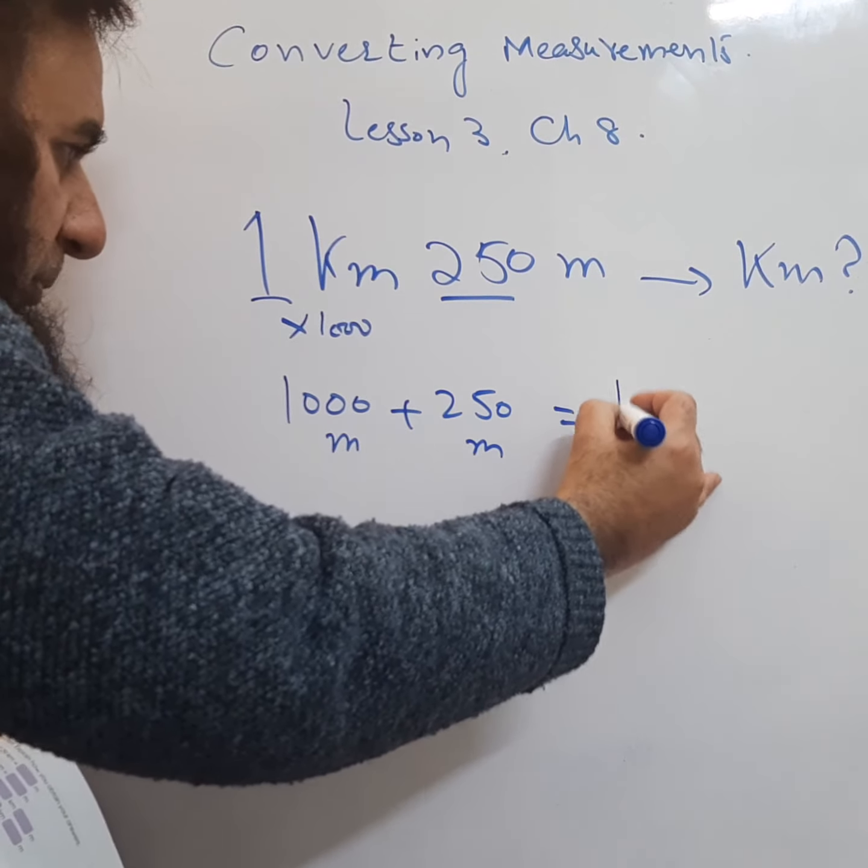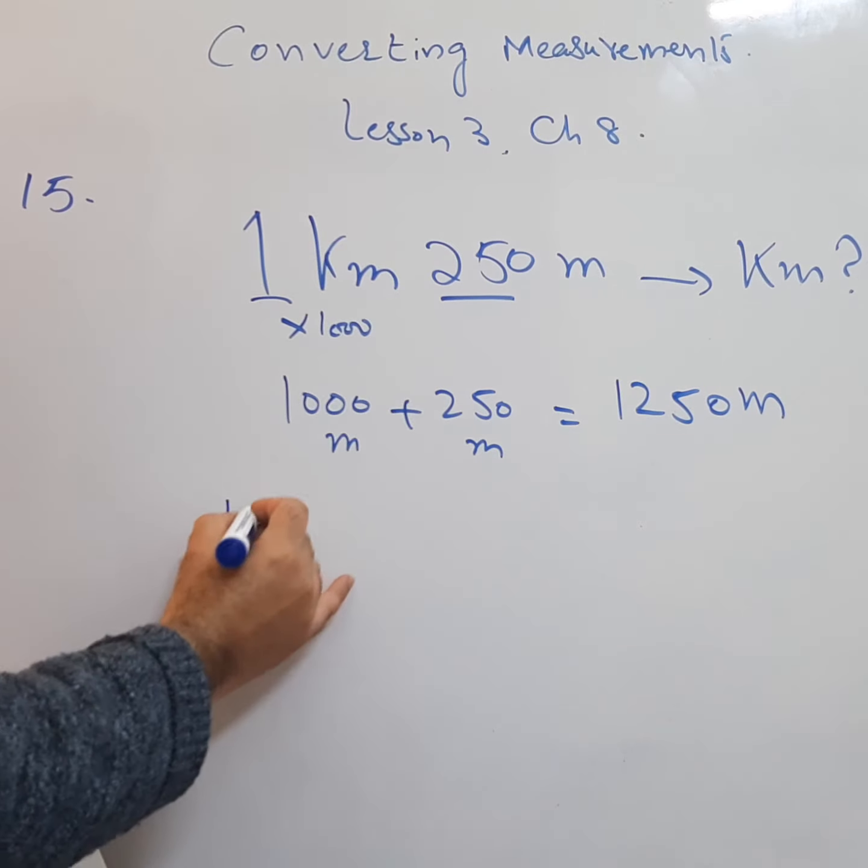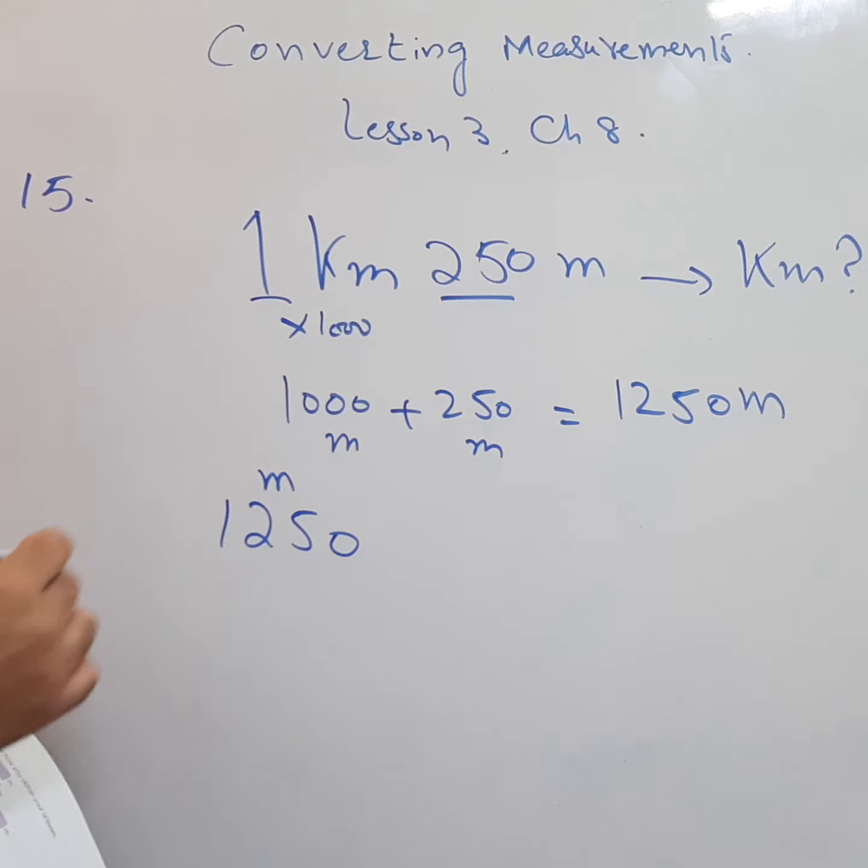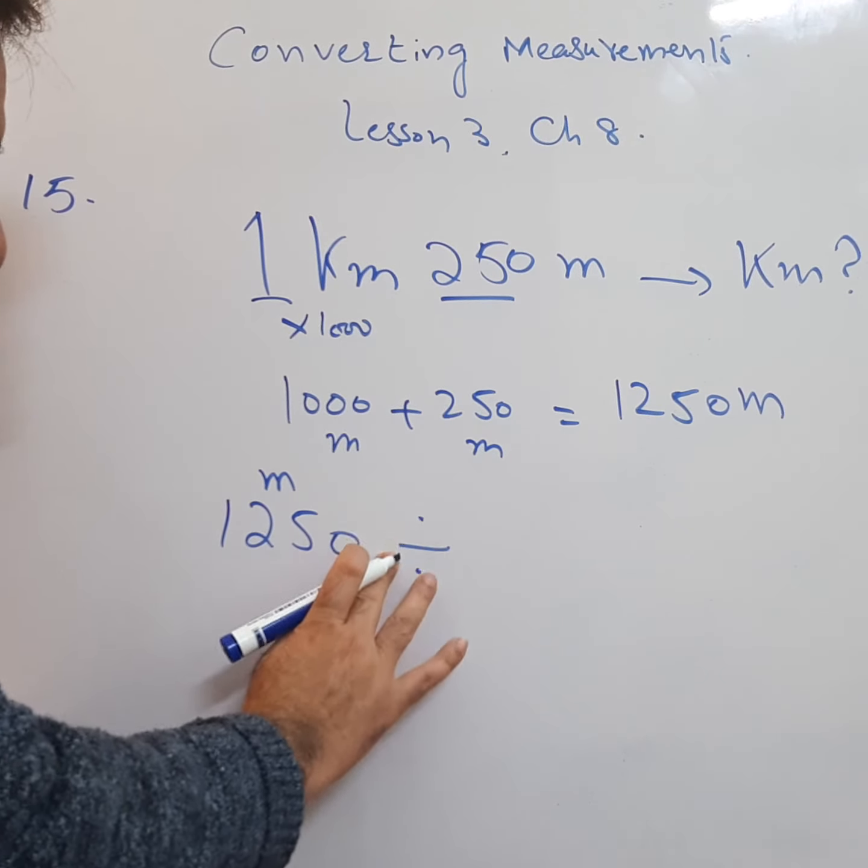So he swam 1250 meters. Now, this 1250 meters, we need to convert it into kilometers. So, just divide it by 1000.